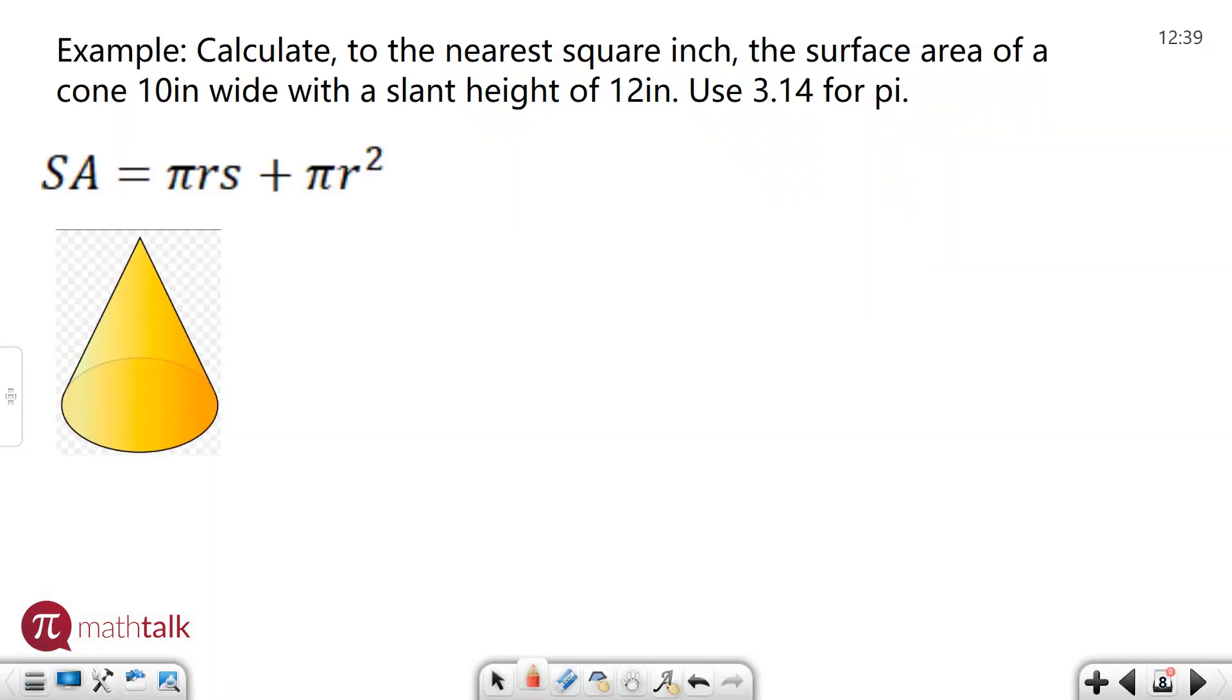We have an example here that asks us to calculate the surface area, and we have the formula and a diagram as well. So they ask us to calculate to the nearest square inch, the surface area of the cone here that is 10 inches wide and has a slant height of 12 inches. And they say use 3.14 for pi. So in the previous video I mentioned that basically anytime I see the statement use 3.14 for pi, it's going to be used in your formula. So keep that in mind as you see that in questions.